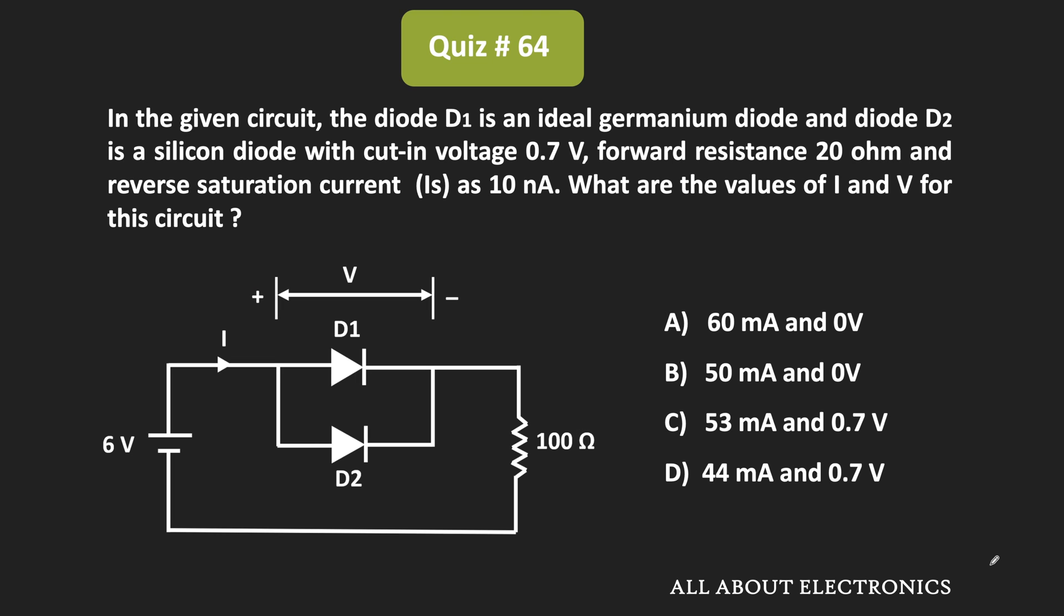Hey friends, welcome to All About Electronics. In this question, we have this diode-based circuit where we need to find the current I and the voltage V for the given circuit.